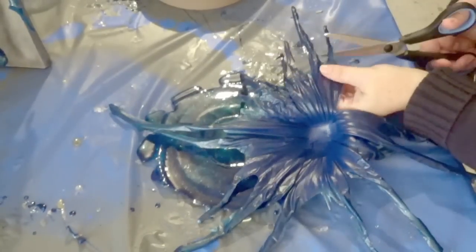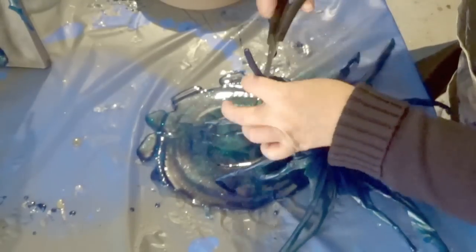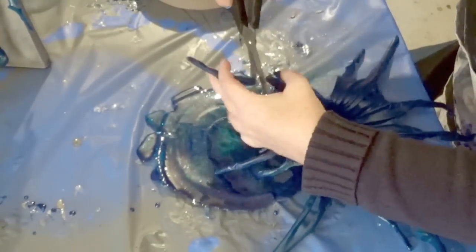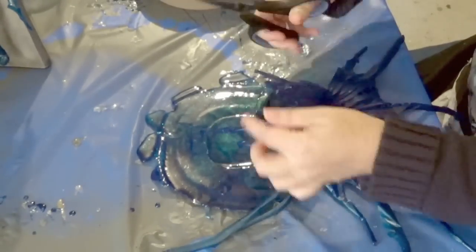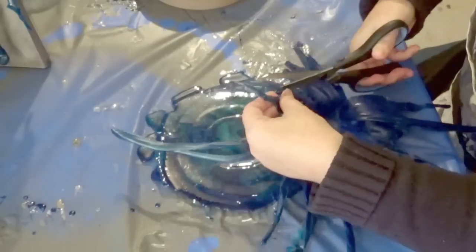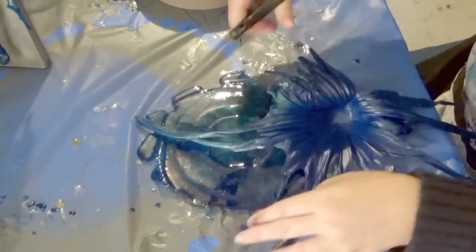Now I'm just going to trim off the excess resin drips. I didn't want the outer edges to have such long drips because I wanted the middle bit to be longer than the outer bit, so I'm just going to go around this now and just trim off any excess.